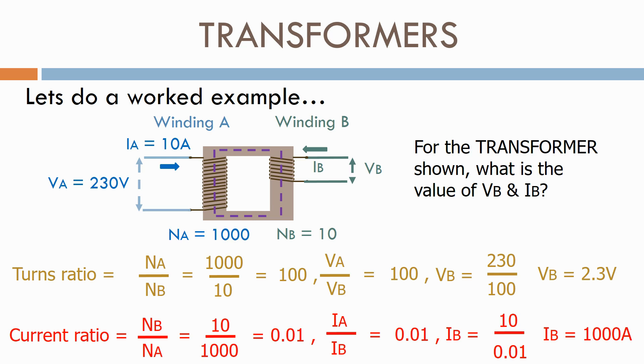We can see from above that the voltage on winding B is now 100th of the voltage on winding A. The current on winding B is 100 times the current on winding A. But remember, the power will remain the same on both windings.